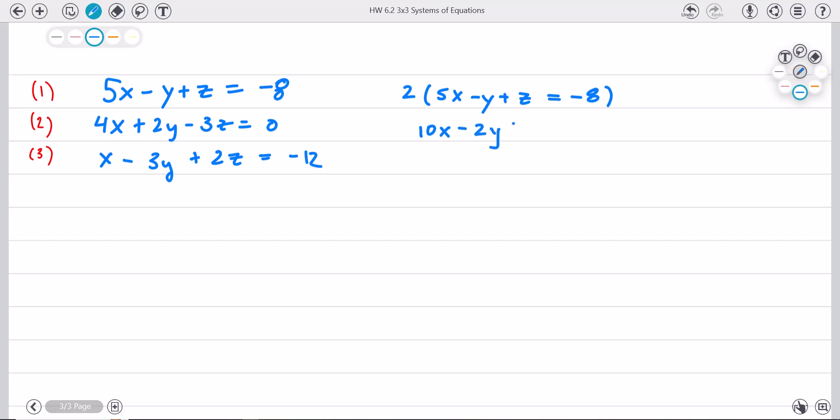So I get ten x minus two y plus two z equals negative sixteen. And now I'm going to take and add equation two. So equation two is four x plus two y minus three z equals zero. When I add these together, I get fourteen x, the y's cancel, and then minus z equals negative sixteen.